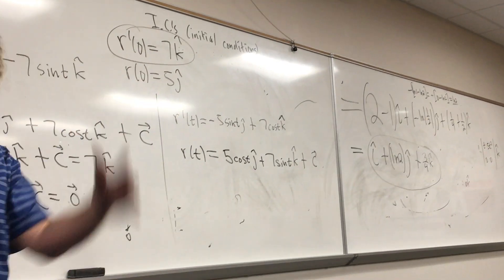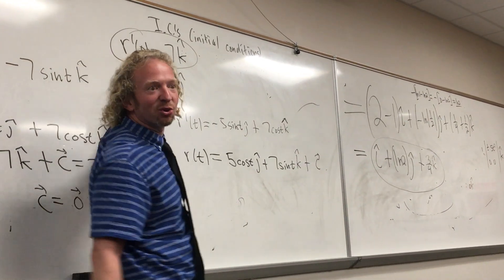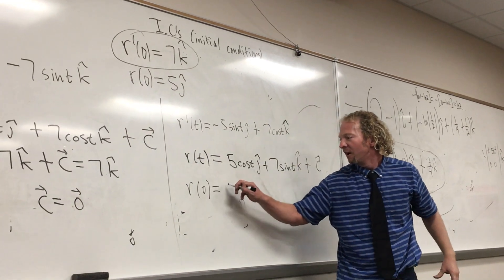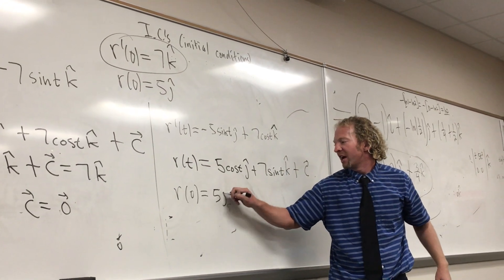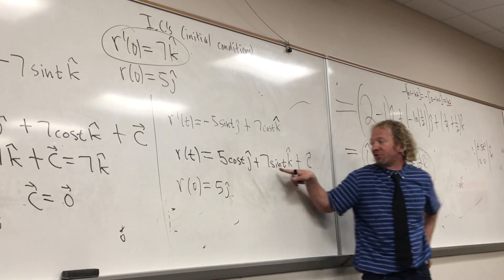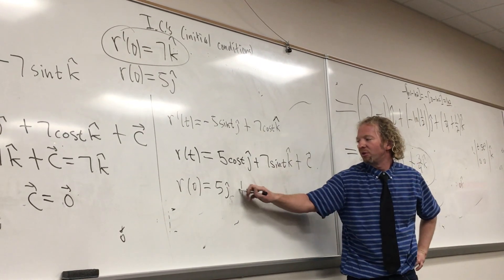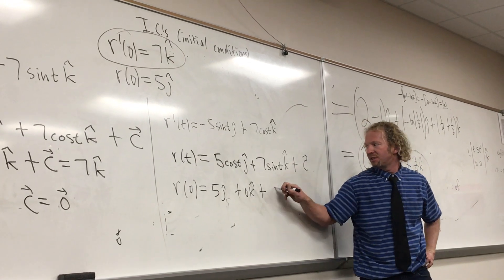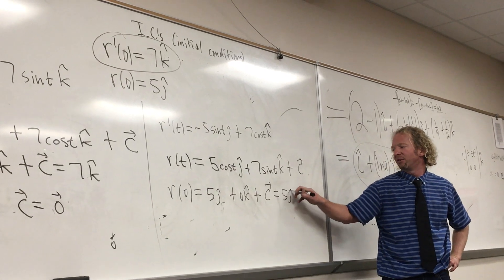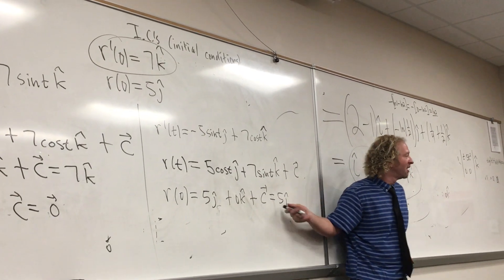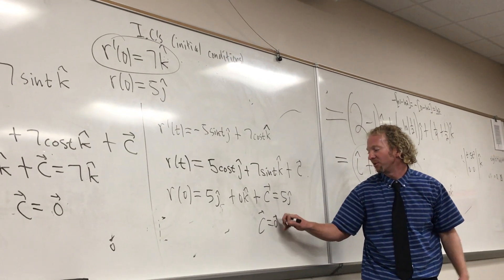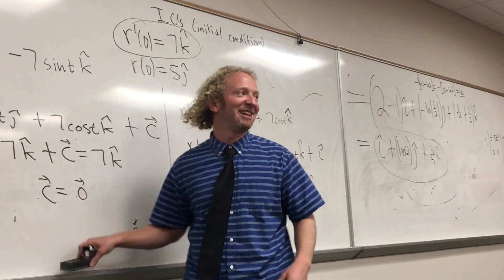And then what do we do next? The initial condition. So R of 0 equals 5 j hat. Cosine of 0 is 1, sine of 0 is 0, so we get 0 k hat plus C equals 5 j hat. C is 0 again. Totally beautiful. I love this problem — it's all zero. Doesn't get any better.